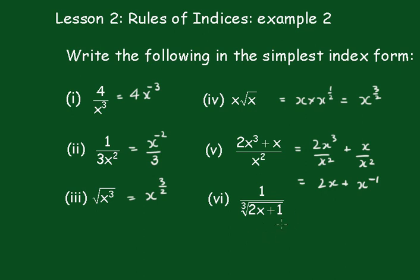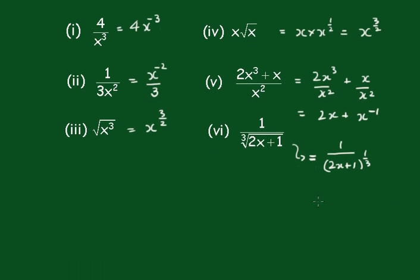This one here, very important one. You'll see a lot of this being used when you use the calculus. Now you'll see that's the cube root of this, so that's 1 over 2x plus 1 to the third. And then taking it up top, that becomes 2x plus 1 to the minus 1 third.